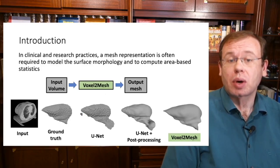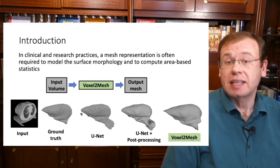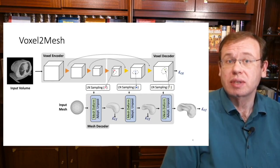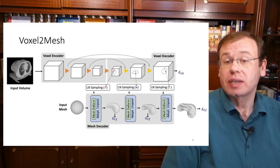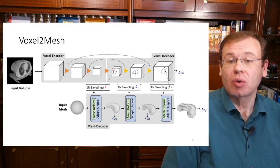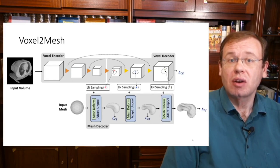The pipeline they propose takes an input volume and directly generates an output mesh. The main idea is a voxel encoder doing downsampling and upsampling, giving results at different resolution scales. Simultaneously, in a linked fashion, they take an input mesh — a sphere — and apply deformations to match the representations in the voxel decoder, allowing them to gradually deform the mesh to produce the final output mesh. Also a very interesting paper — I really recommend looking at it.